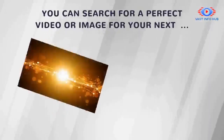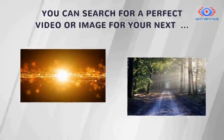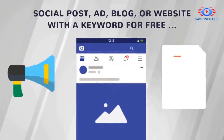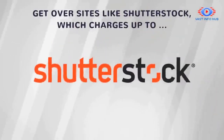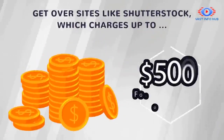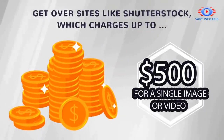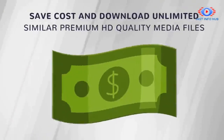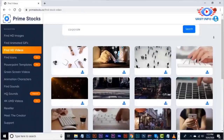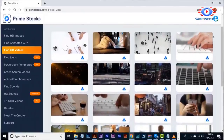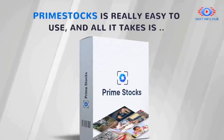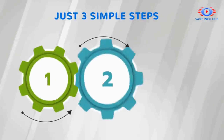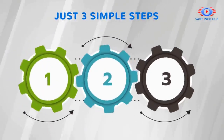You can search for a perfect video or image for your next social post, ad, blog, or website with a keyword — for free. Get over sites like Shutterstock which charge up to $500 for a single image or video. Save costs and download unlimited similar premium HD quality media files. Prime Stocks is easy to use and all it takes is just 3 simple steps.